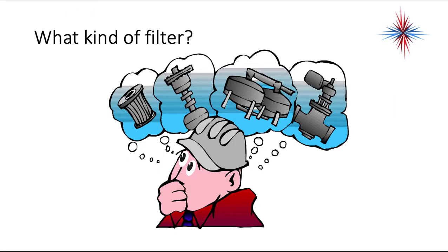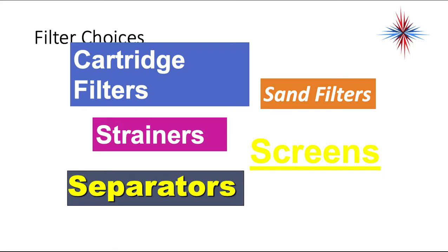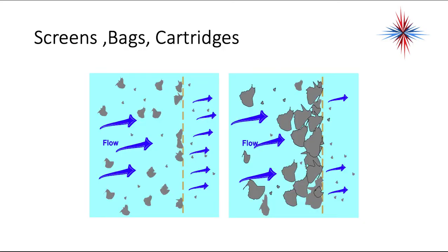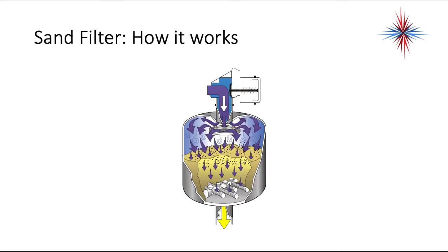For filtering we have cartridge filters, sand filters, strainers, screens, and separators. Screens, bags, and cartridges are very effective unless there's larger contamination in the fluid which can blind a barrier filter quickly, leading to excessive pressure loss and cleaning or replacement routines. The sand filter is more like what you find in a swimming pool — it relies on a bed of coarse sand media to capture contaminants on its upper surface, and to clean it, you backflush the sand or replace it.